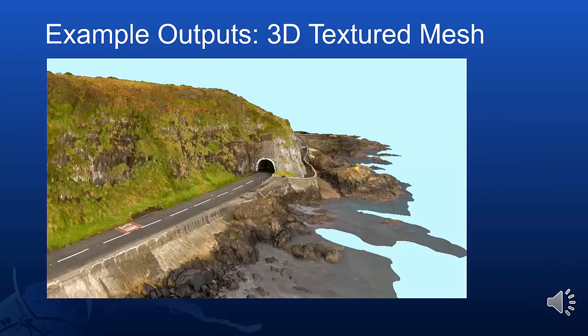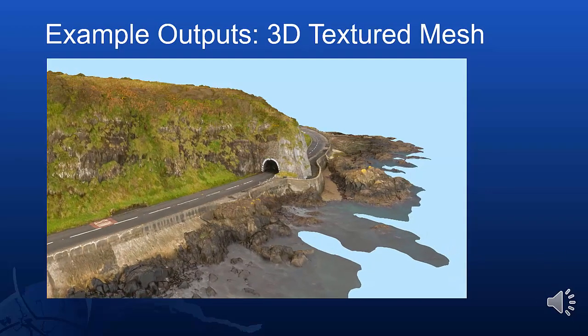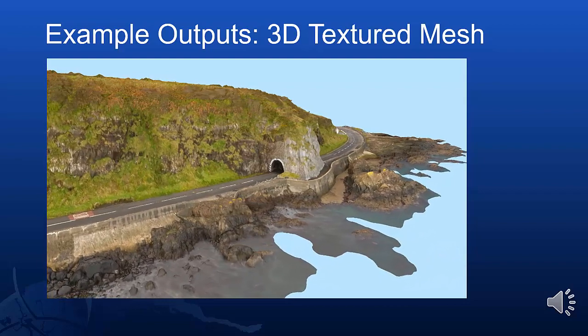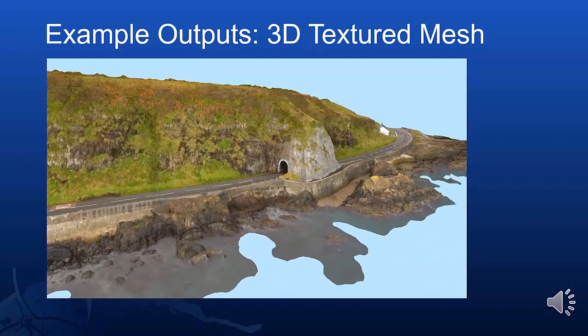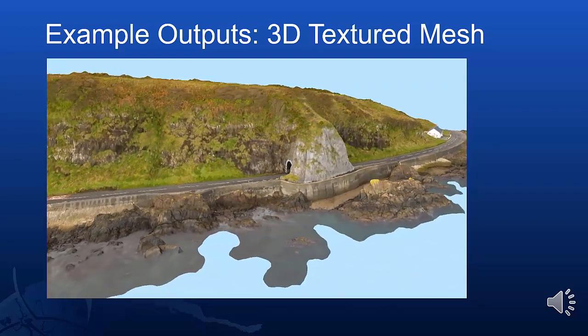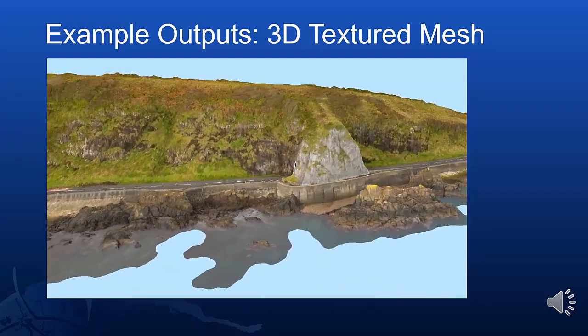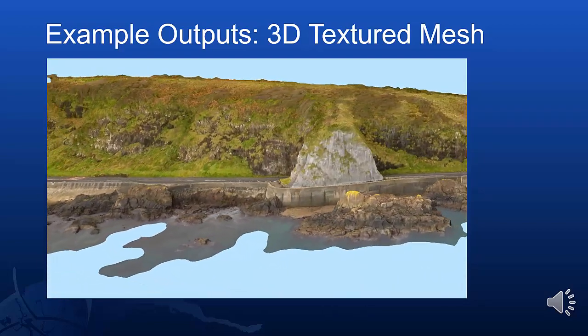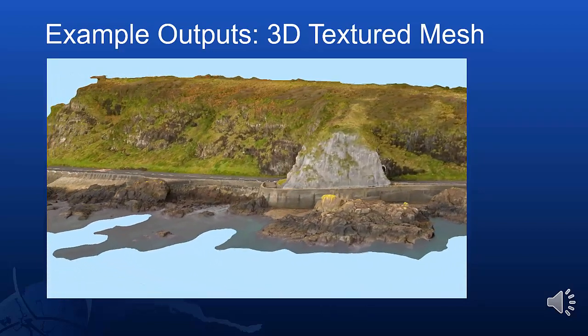This is one of the smaller sites that we were looking at — the Black Arch on the Antrim Coast Road. It illustrates the sort of information that we are trying to capture, where we have cliff face which is prone to falls, and we also have coastal defences.